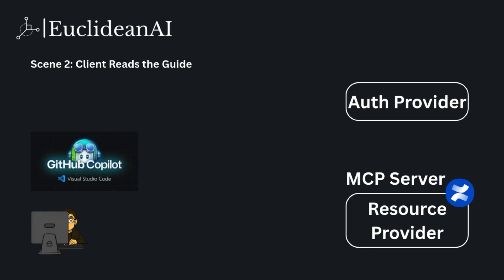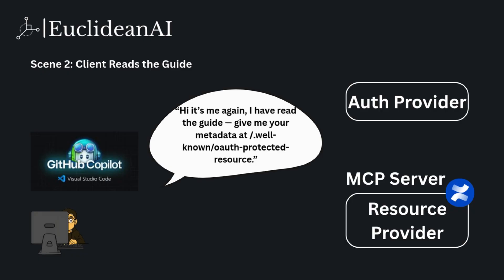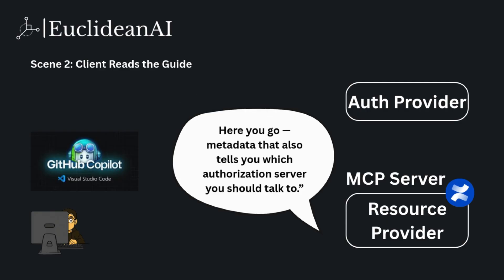In scene two, the client reads the guide provided by the MCP server in scene one, and comes back again to request the metadata at /.well-known/oauth-protected-resource. This time, the MCP server replies with the metadata, which also tells the client which authorization server it should talk to.